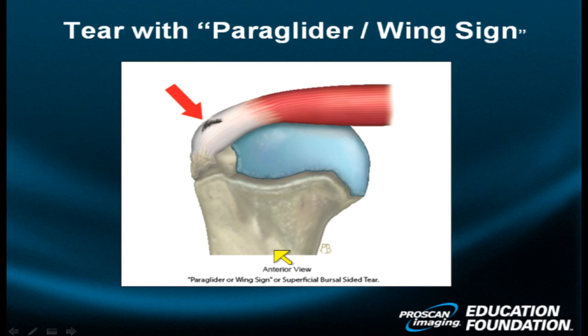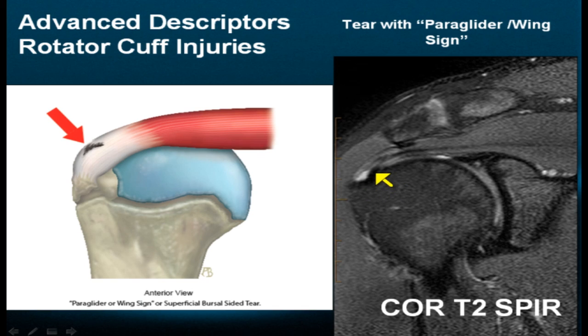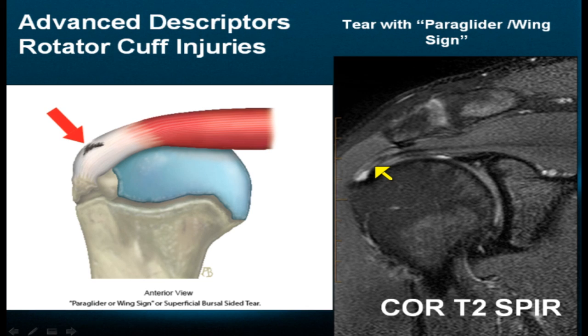Another descriptor for rotator cuff pathology is the paraglider or wing sign. When you have a relatively deep but bursal-sided tear, the edges of the rotator cuff may bunch, producing something that looks like the wings of a bird or butterfly. On the actual MR image, the superficial bursal-sided tear has a broad, almost elliptical configuration. There is one wing medially, another wing laterally, due to bunching of the interstitial fibers from a relatively robust bursal-sided tear.